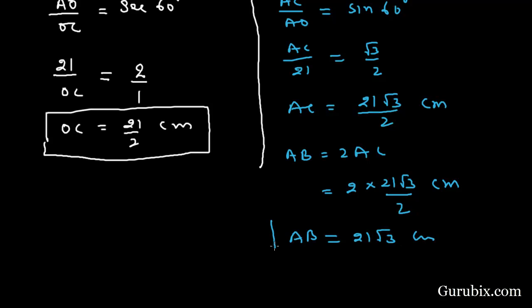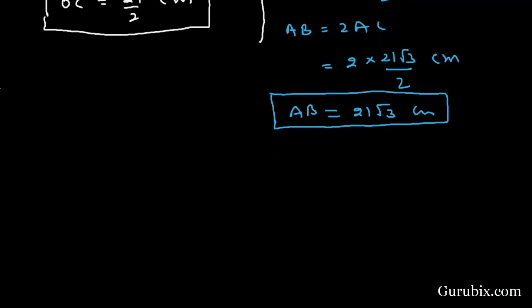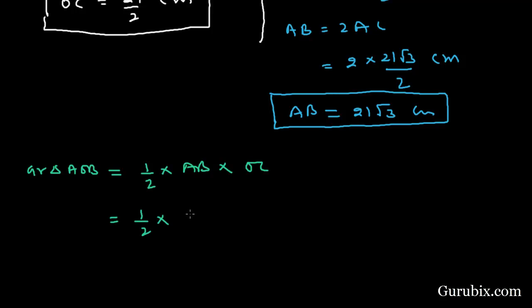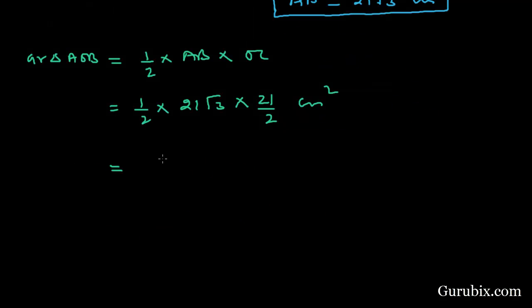Now we can find the area of triangle AOB using the formula: one half times base times height. Base AB equals 21 root 3 cm and height OC equals 21 over 2 cm. So the area equals one half times 21 root 3 times 21 over 2, which gives 441 root 3 over 4 cm squared.